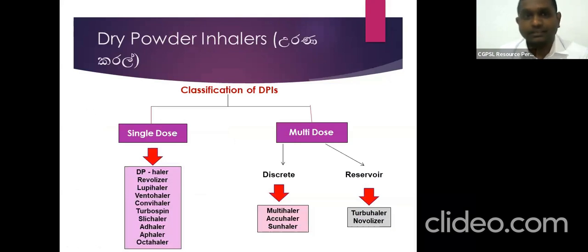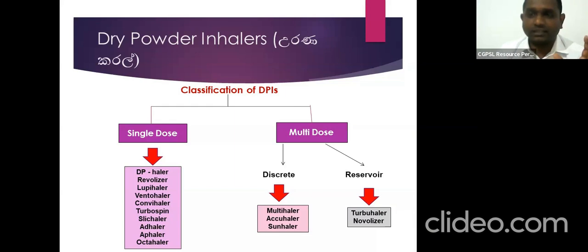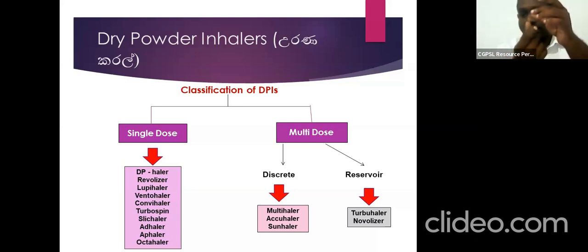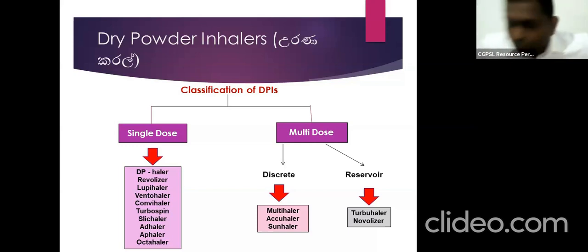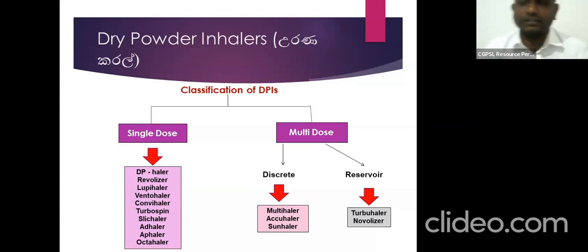Now let's move into the dry powder inhalers. There are a lot of inhalers in the market. There are single-dose inhalers and multi-dose inhalers. Multi-dose inhalers have two different categories. For single-dose inhalers you have the deep inhaler, the Rotahaler — you can name them. Some devices have the piercing technique, and some devices have the rotation technique, like the DP inhaler. Devices like the Ventolin inhaler, Rotahaler, breeze inhaler, and Rotahaler are all devices using the piercing technique.